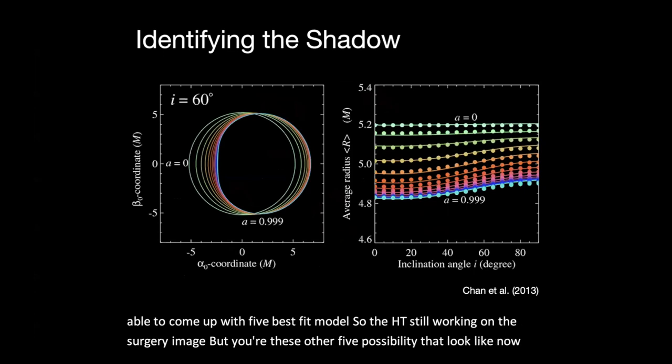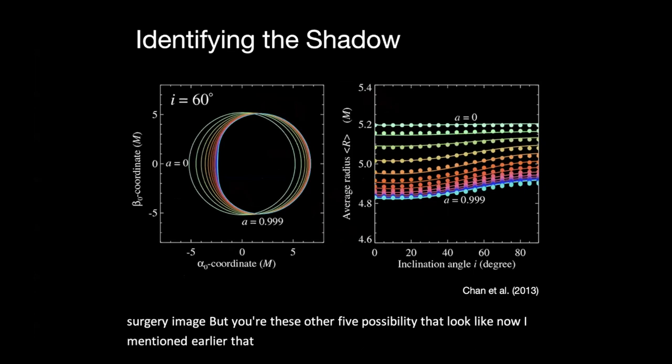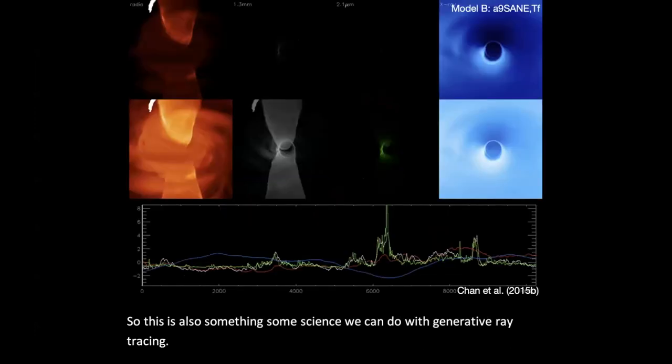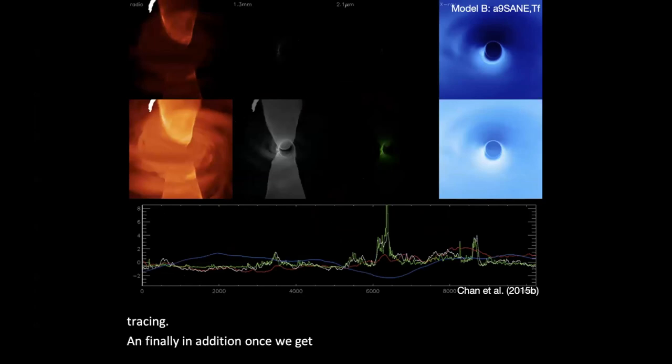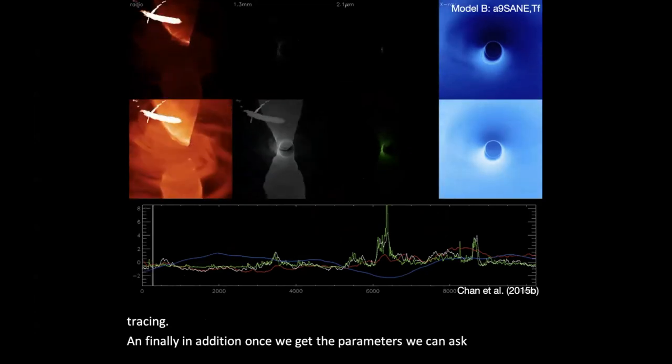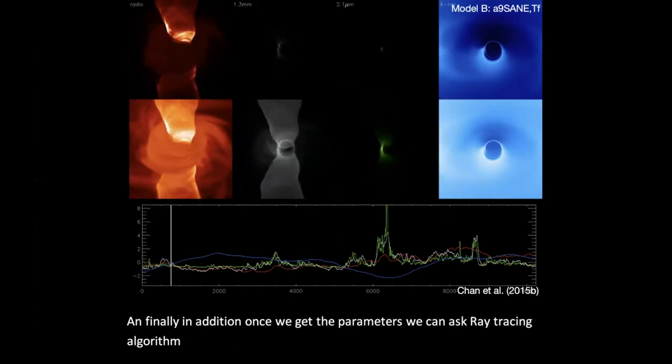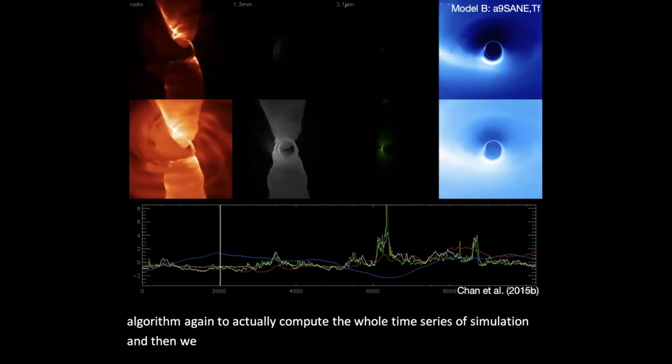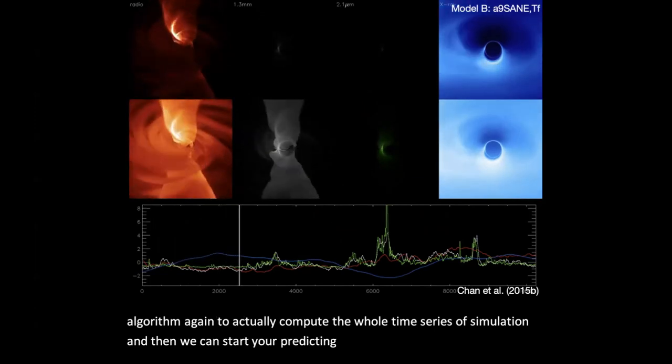Now, I mentioned earlier that different theories of gravity will give you different prediction of the shadow size. So this is also something, some science we can do with general relativistic ray tracing. And finally, in addition, once we get the parameters, we can ask the ray tracing algorithm again to actually compute a whole time series of simulation. And then we can start predicting the variability of these different models.